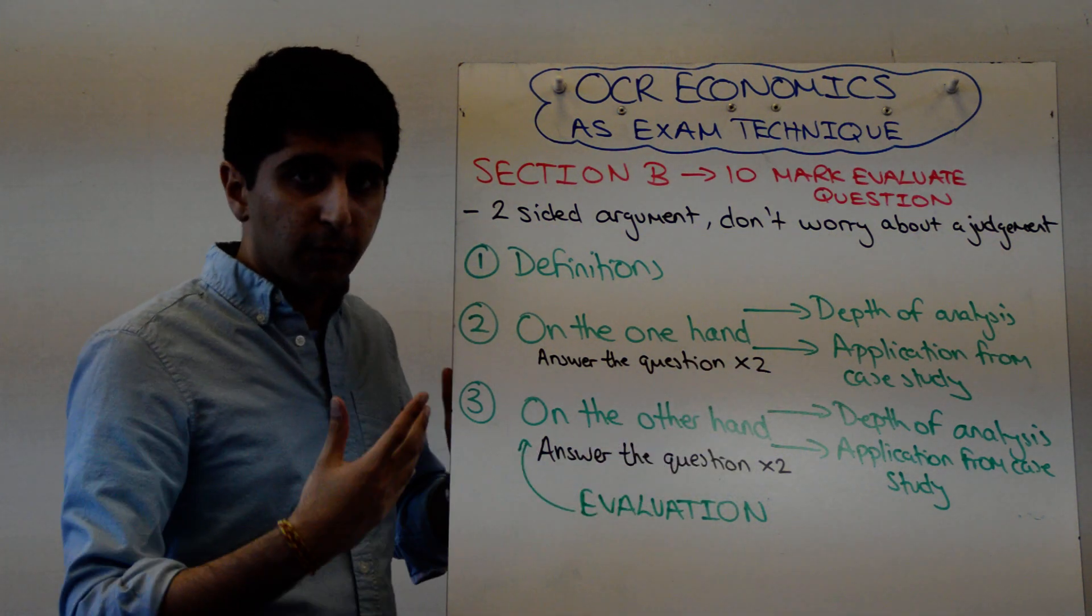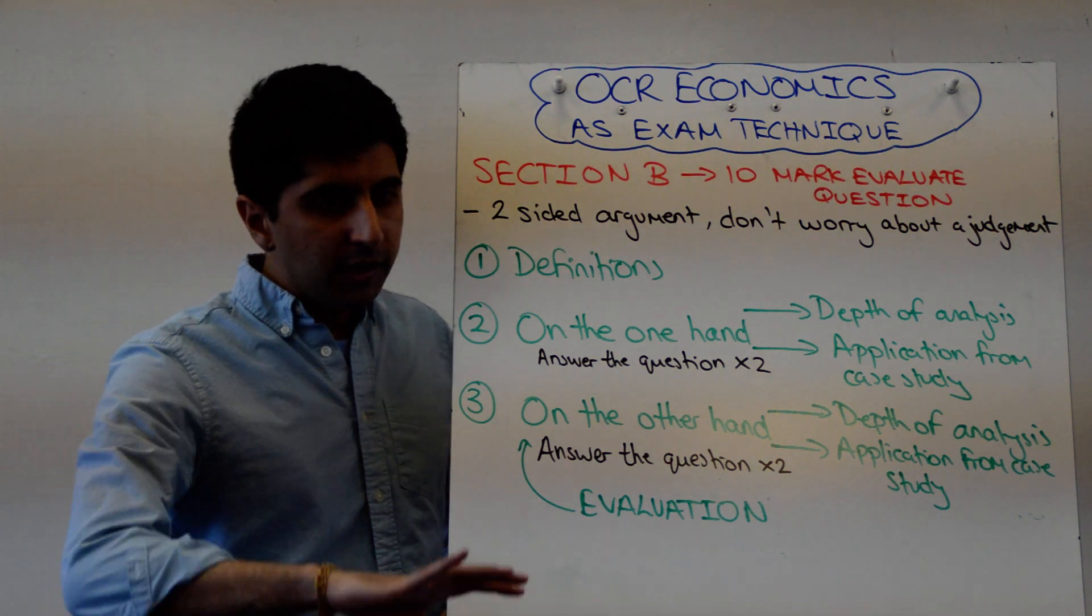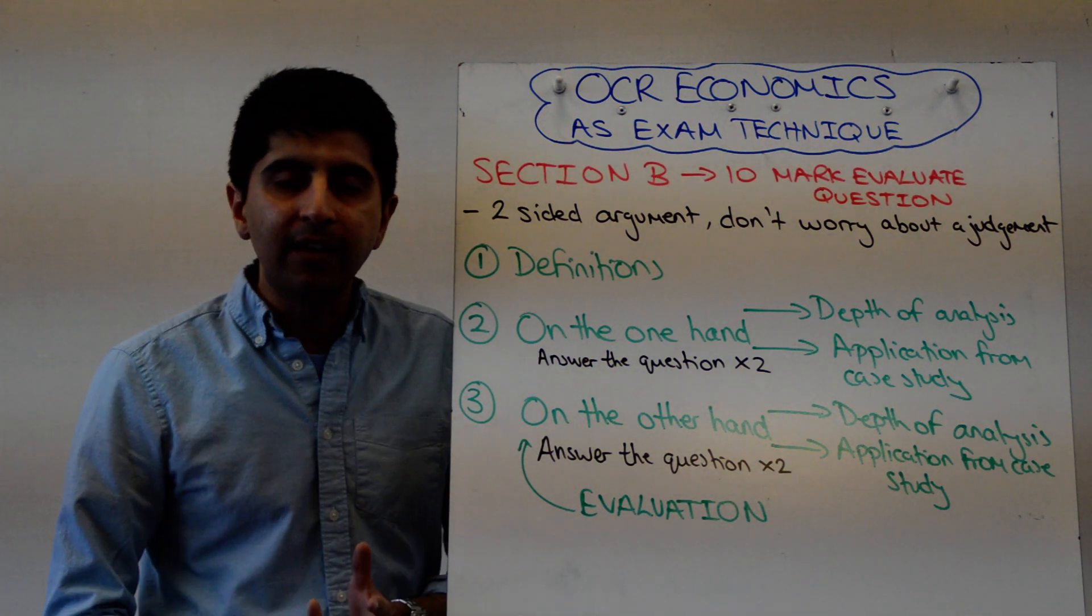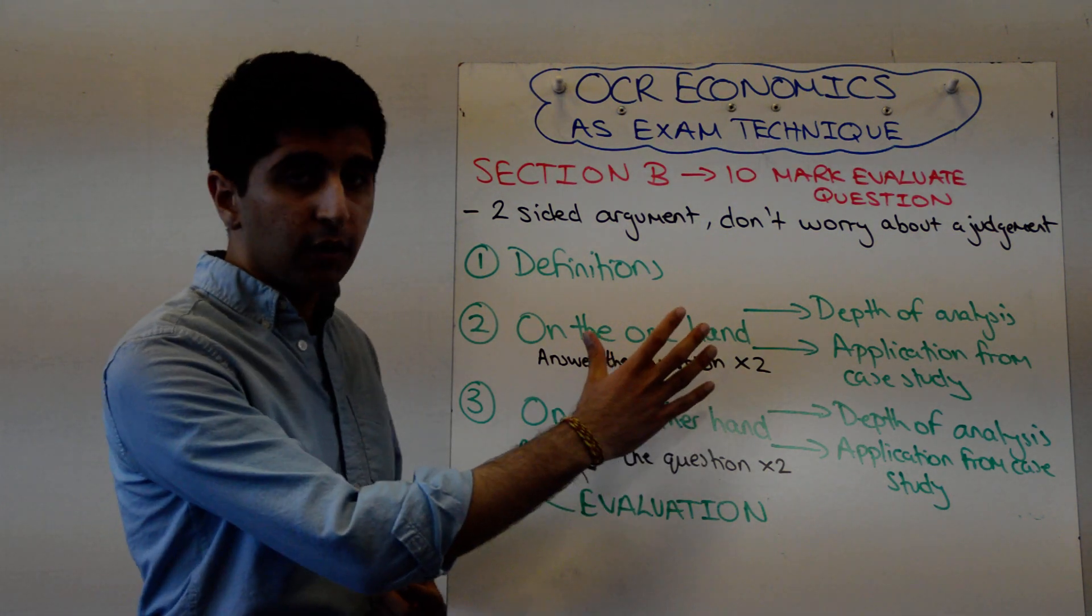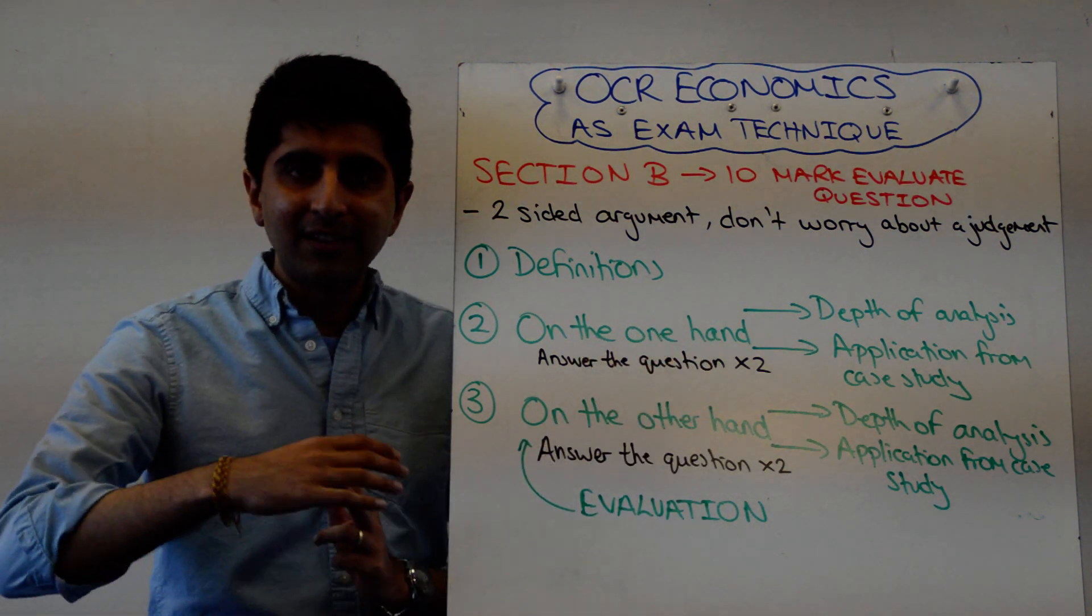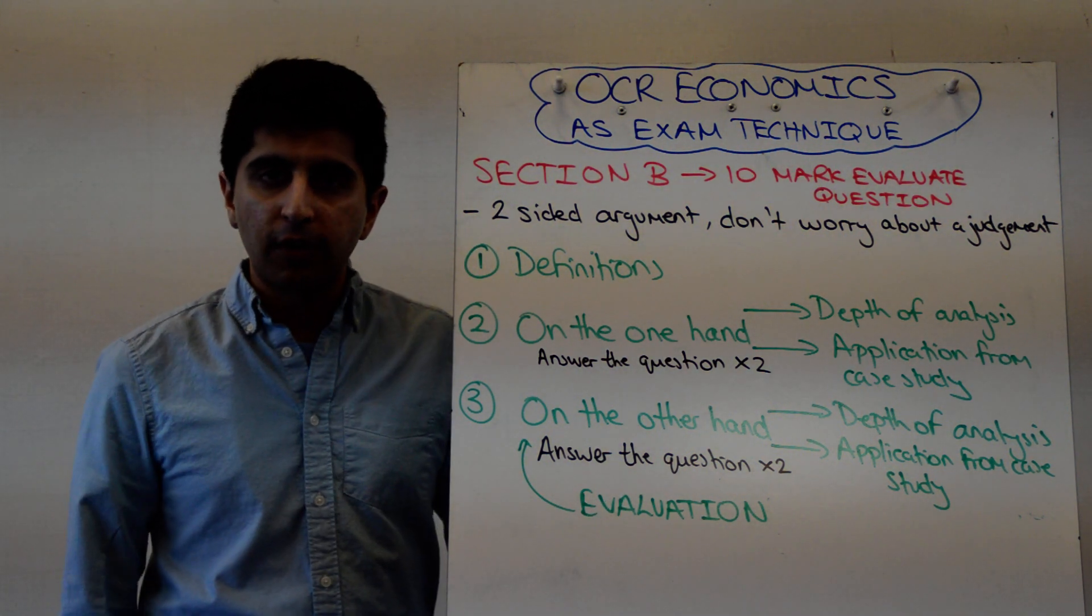So you make two of those points, that's my recommendation here, just to bolster your argument on the one hand. Then you go straight into on the other hand. Now your on the other hand points could be limitations of the theory you set on the one hand, or what your theory on the one hand depends on. Both count as evaluation in the mind of the OCR examiner.